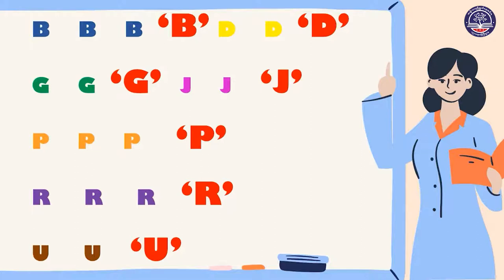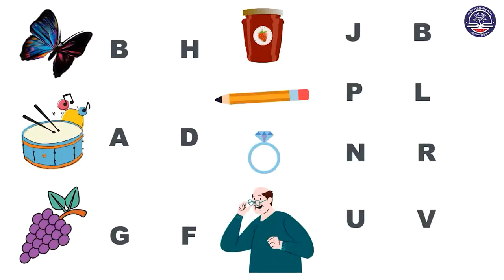Good job, everyone. Did you have fun? Great. Now let's do one exercise together. I have one exercise prepared for you. Let's see what it is. Oh, there are many pictures here. Do you see them? And there are also letters beside it. What you have to do is circle and choose the beginning letters for the pictures.